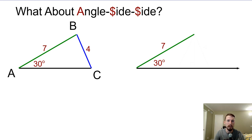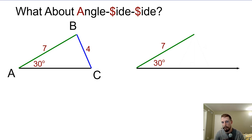If we do have the angles, we need one of the sides — either the included side, like angle-side-angle, or angle-angle-side, which would be a side that's after the two angles, not in between them. So those are the four postulates we have, and the one that doesn't work is angle-angle.